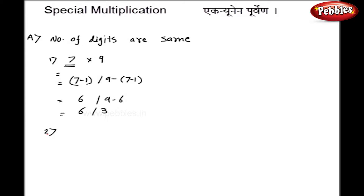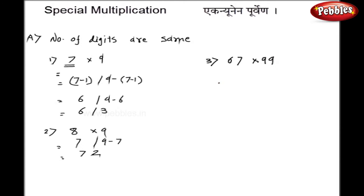Let us take another example: 8 into 9. I will split it. 8 minus 1 gives 7 directly, and I subtract the same number from 9, that is 9 minus 7, so it becomes 72. Let us take a third example: 67 multiplied by 99. My left hand side becomes 67 minus 1, that is 66, and I subtract 66 from 99. So my answer is 6633.